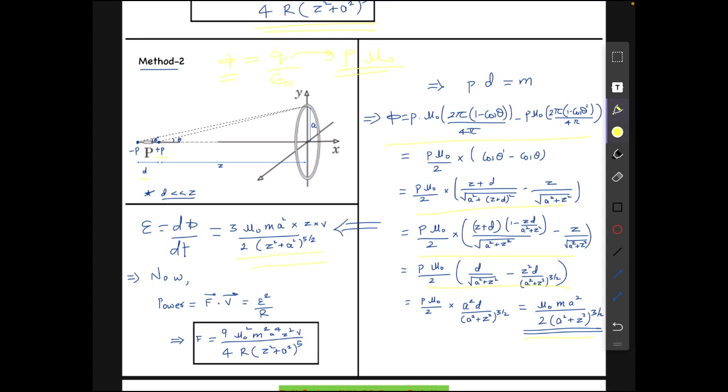Now there is one more way we can solve from ahead. The power equals to force times velocity which will be equals to v square over r or epsilon square over r where r is the resistance in the ring. From here the force can be calculated very easily to be the same value which we found in the earlier answer.